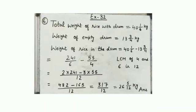So let's start the statement. Total weight of rice with drum. Weight of rice in the drum, 40 1/6 minus 13 3/4 kg.